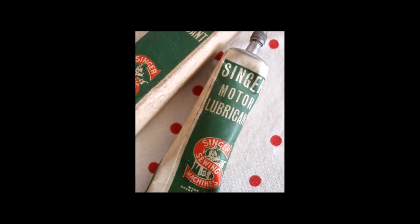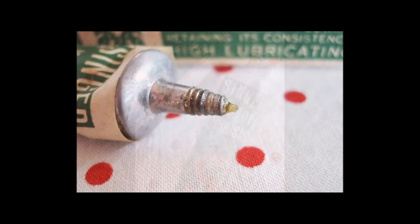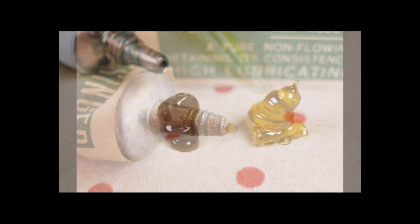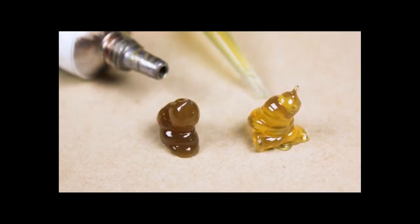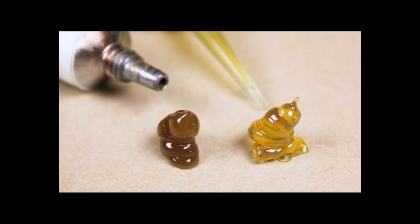Original Singer lubricant from the era of the Featherweight is a basic non-flowing, low melting point grease. Non-flowing meaning that it will generally stay where it is put, and low melting point meaning under low heat, the lubricant will gradually melt and be reduced to its basic lubricating properties.